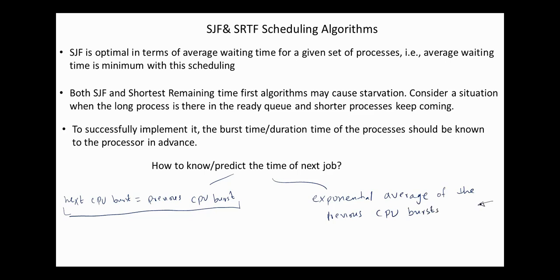In that case, we need to record the previous CPU bursts and calculate the average for them. So in practice, shortest job first and shortest remaining time first are not used — they are mainly used for comparison and evaluation purposes. Our next topic is priority CPU scheduling. That's all for today, thank you.